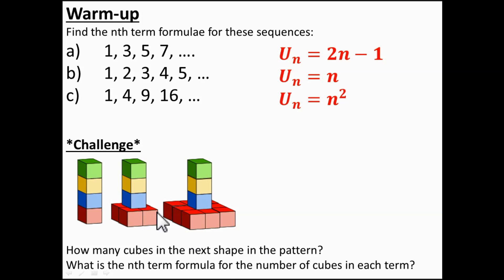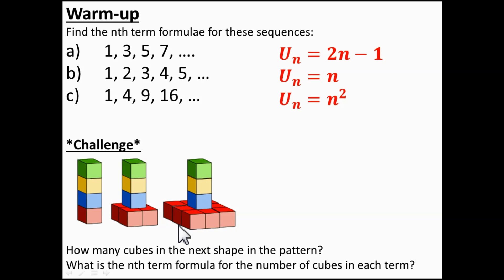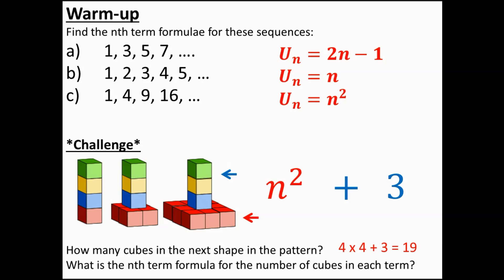So let's have a look at this pattern. In each three-dimensional shape we have red cubes at the bottom and vertically stacked cubes on top. For n equals 1 we have one cube. For n equals 2 we have a two-by-two set of red cubes at the bottom. For n equals 3 we have a three-by-three set of red cubes, which means in our nth term formula these red cubes are represented by n squared. On top there are always three vertically stacked cubes, so we add 3, giving us the nth term formula n squared plus 3. In the next pattern there will be 19 cubes.